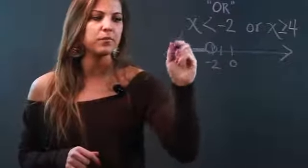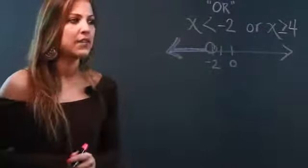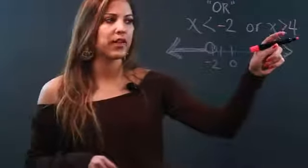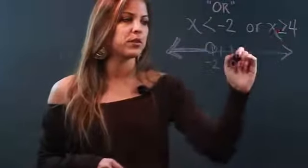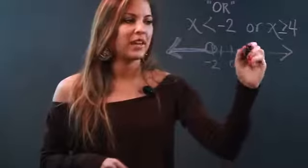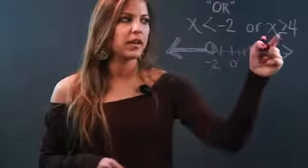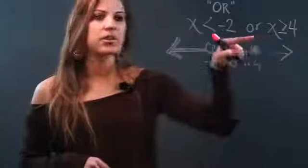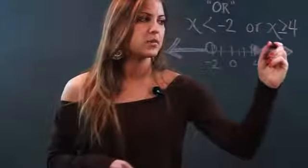Now for the second inequality, X is greater than or equal to 4. So I'm going to go to 1, 2, 3, 4, and I'm putting a closed circle on 4 because of that line underneath the inequality. All the numbers that are greater than 4 are over to the right, so that shades this way.